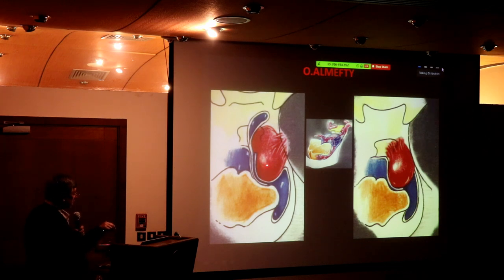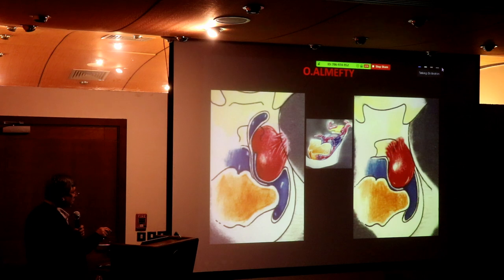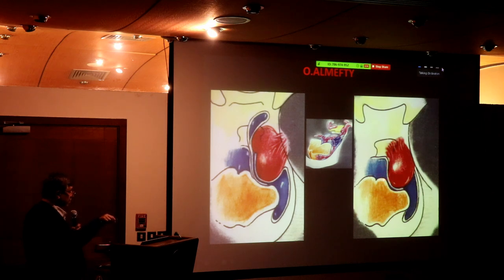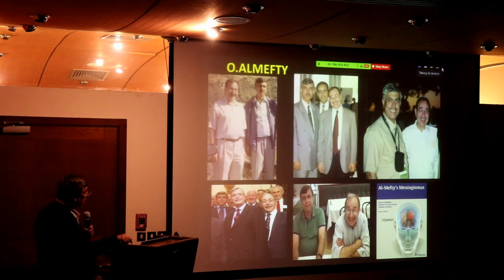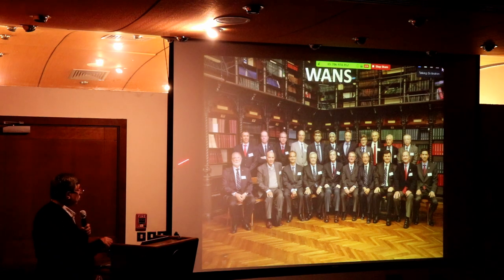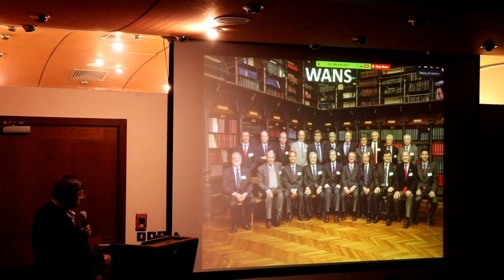Al-Mefty described in beautiful illustrations — every department should have a medical artist — that some meningiomas have arachnoid between them and the brainstem, a double layer of arachnoid. He would say: give me hundreds of those, don't give me any one where there is only a single plane of arachnoid between the tumor and the brainstem. He is a close friend and we are in the World Academy of Neurosurgery, meeting in Brazil soon.